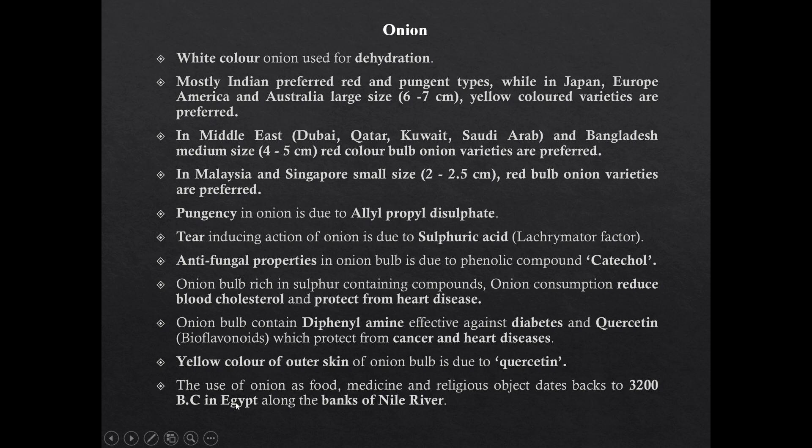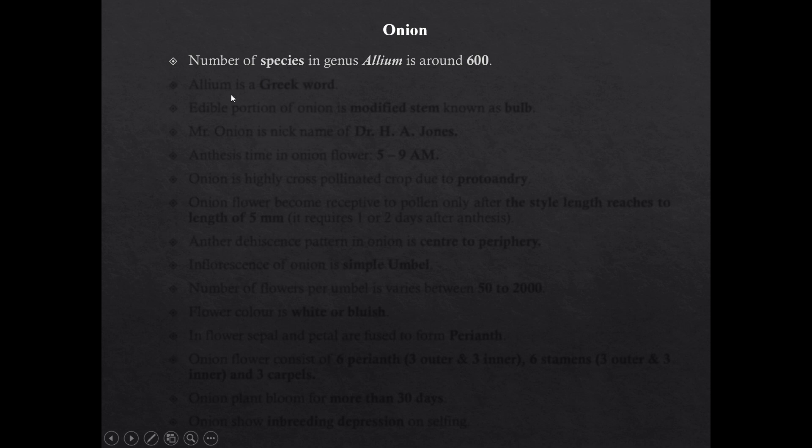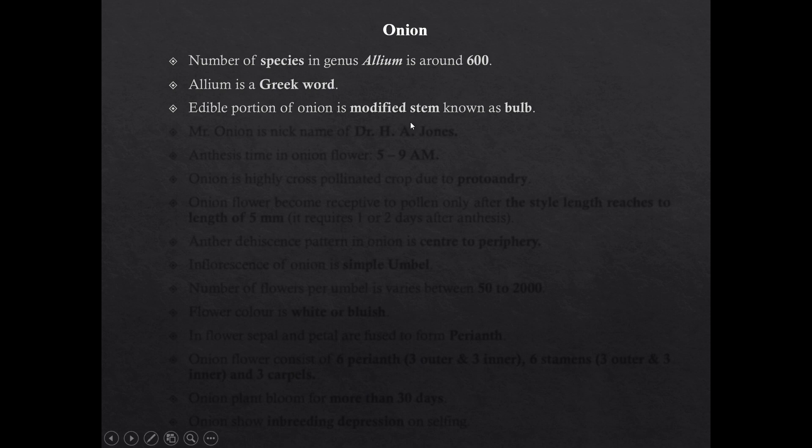The use of onion as a food, medicine, and religious object dates back to 3200 BC in Egypt. At that time onion cultivation was at the bank of the Nile river. Number of species under genus Allium is around 600. Allium is a Greek word. The edible portion of onion is a modified stem which is known as a bulb.